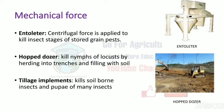Next is the hopper dozer, which works like a bulldozer and digs the soil. When soil is dug, eggs or nymphs present in the soil are exposed to the sun and killed. Additionally, tillage implements such as tractors are used in agricultural fields to destroy soil-born insects and pupae.